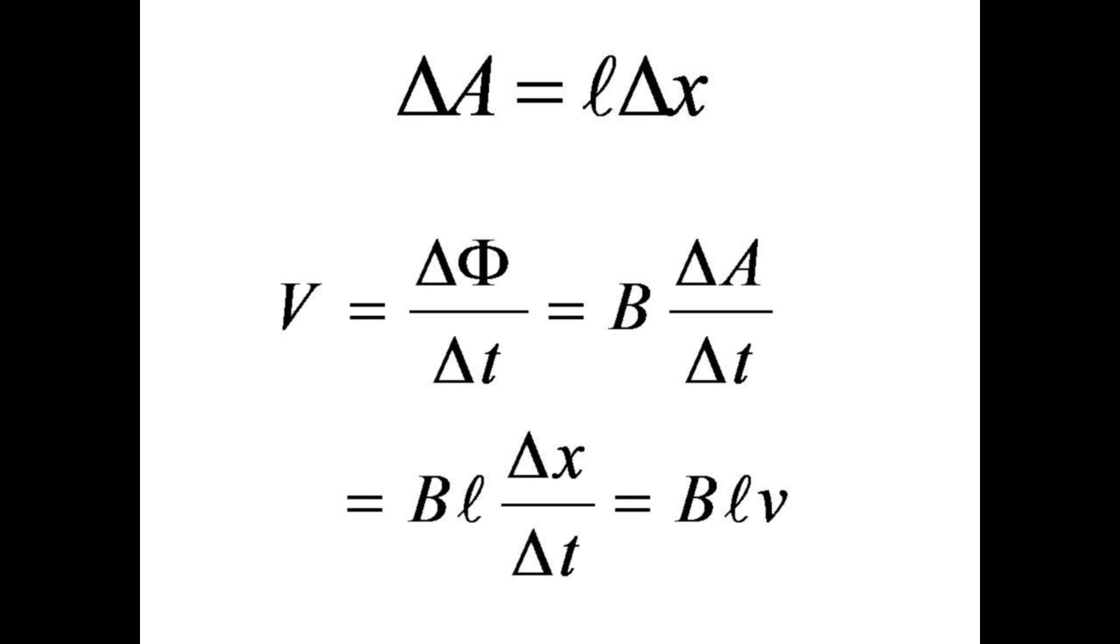By Faraday's law, the induced voltage is the rate of change of flux, which is just the constant B times the rate of change of area delta A over delta t. This becomes B times L times the rate of change of the distance x, which is just B times L times the velocity V.